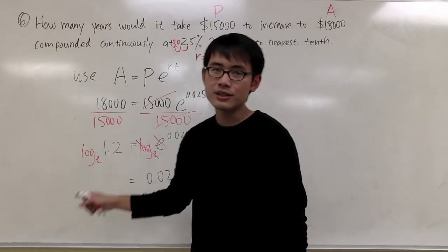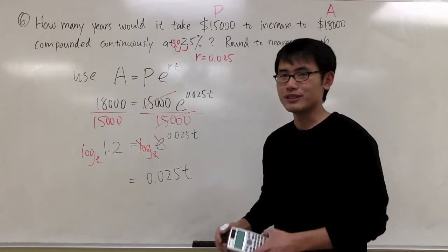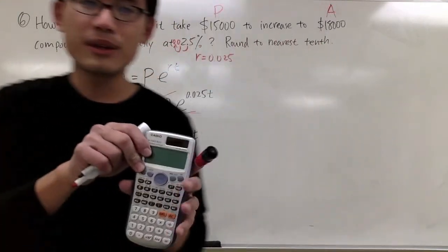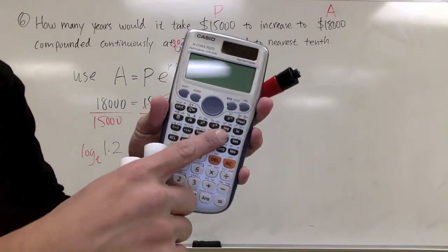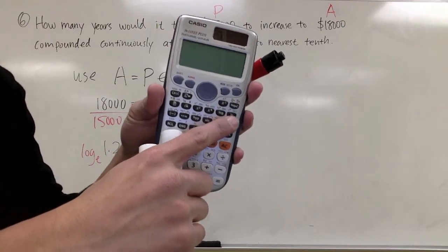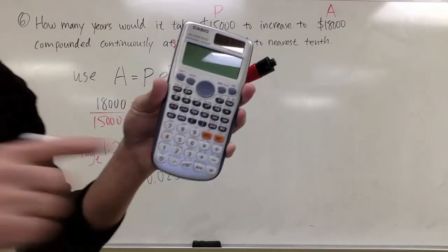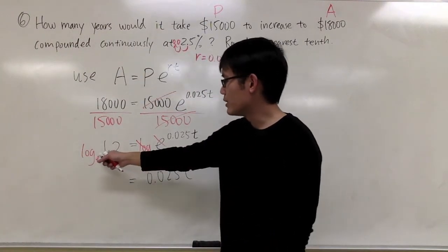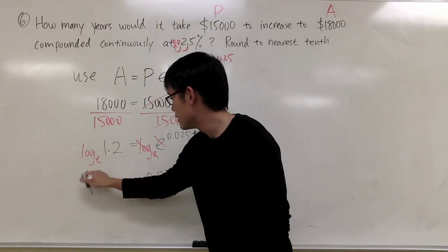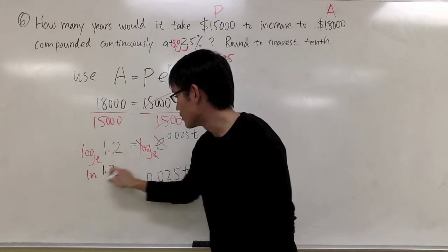If you want to do this, this is actually another key that we can use. So you take out your calculator. We only have a regular log, but we also have the LN button, and the LN button is exactly log base e.